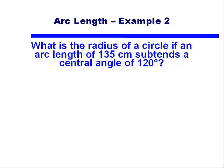So here is another example. Now we have an arc length of 135 centimeters. We're given our central angle of 120 degrees, but now we need to find the radius. Again, we'll use the same formula we did before, but now we know S and theta and we don't know R. Well, let's double check that. We've been given an angle in degrees.